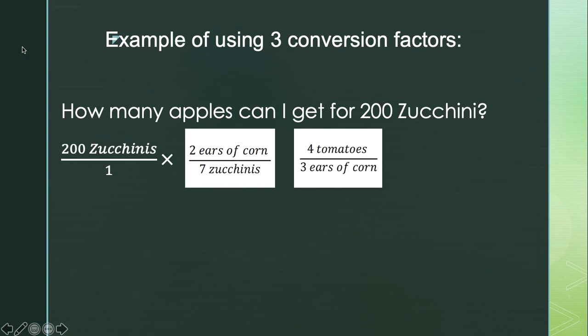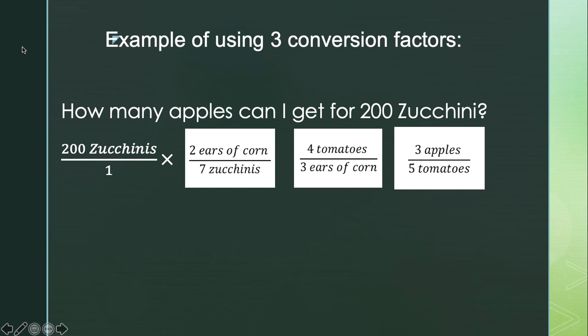For our last conversion factor, we use the relationship between tomatoes and apples. I want to make sure I pick the conversion factor that has tomatoes in the denominator and apples in the numerator — whatever you're trying to convert to should be in the numerator. So I pick 3 apples over 5 tomatoes. Now it's like a puzzle — we put the pieces together so I can cross off all my units from top to bottom: cross off zucchinis, cross off ears of corn, cross off tomatoes, and what I'm left with is apples.